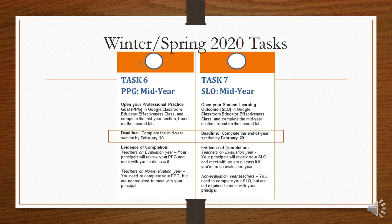Let's start the day with a review of our yearly educator effectiveness tasks. Your PLC point person has a new winter-spring 2020 punch card for you. The next deadline you should be aware of is February 20th — this is when your mid-year PPG and SLO are due.